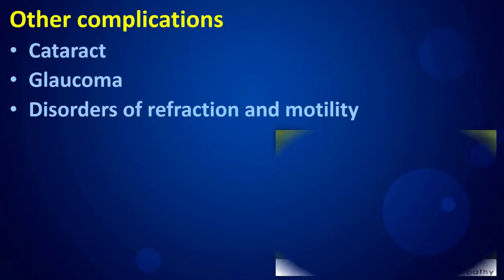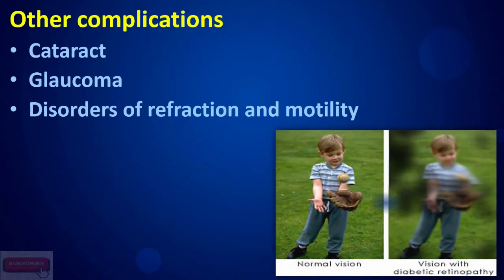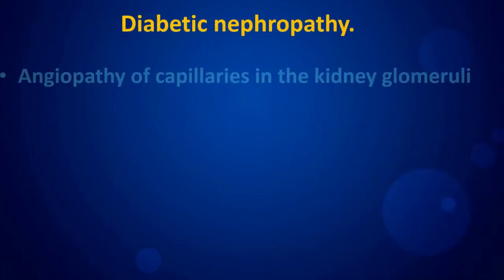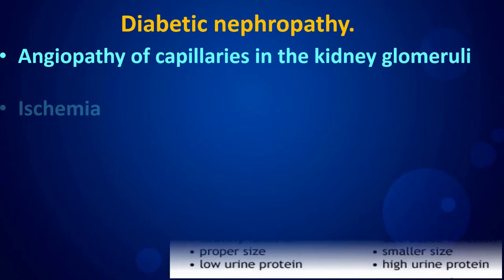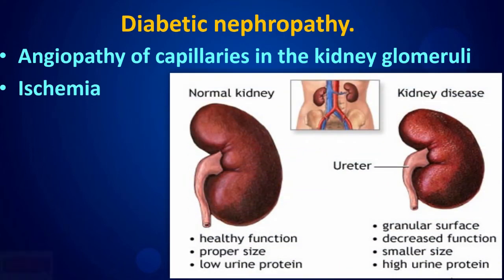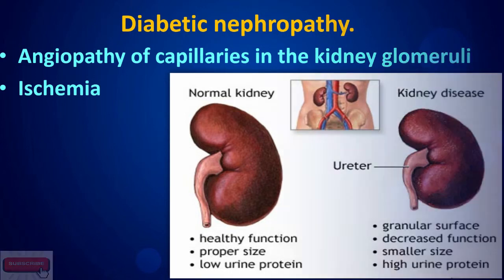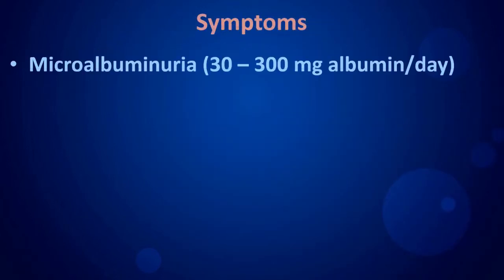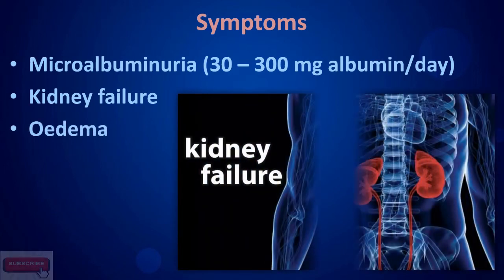Other eye complications include cataract, glaucoma, and disorders of refraction and motility. Diabetic nephropathy involves angiopathy of the capillaries in the kidney glomeruli, causing ischemia. Symptoms include microalbuminuria, kidney failure, and oedema.